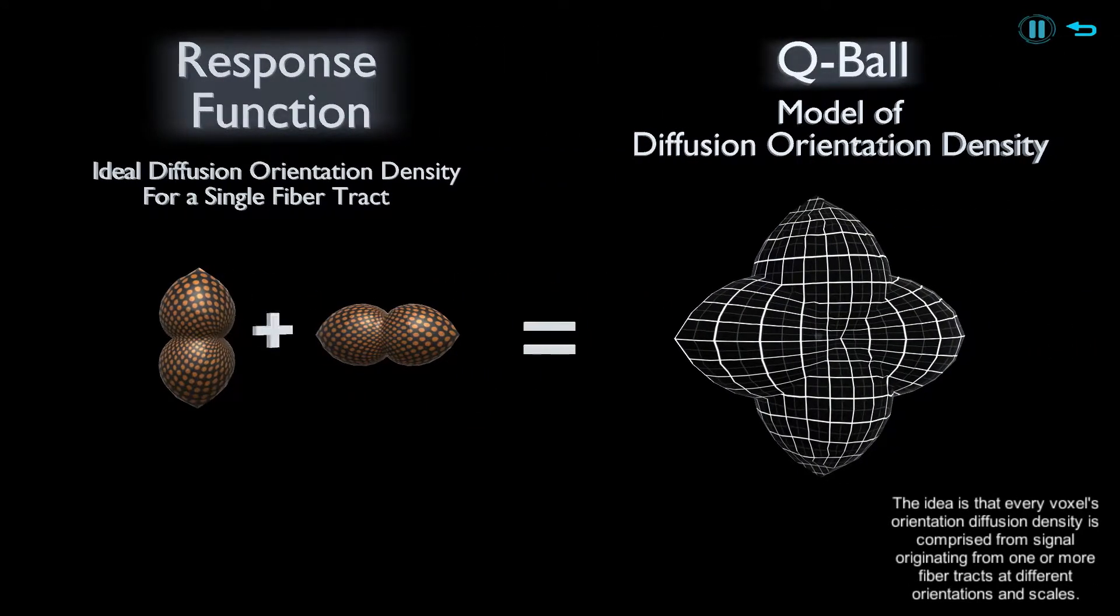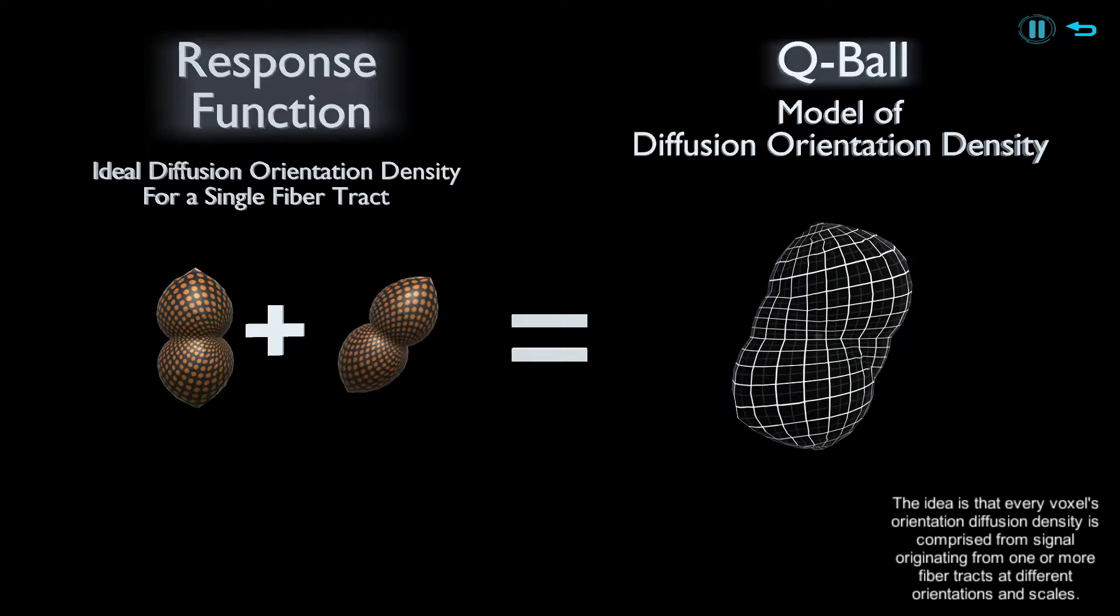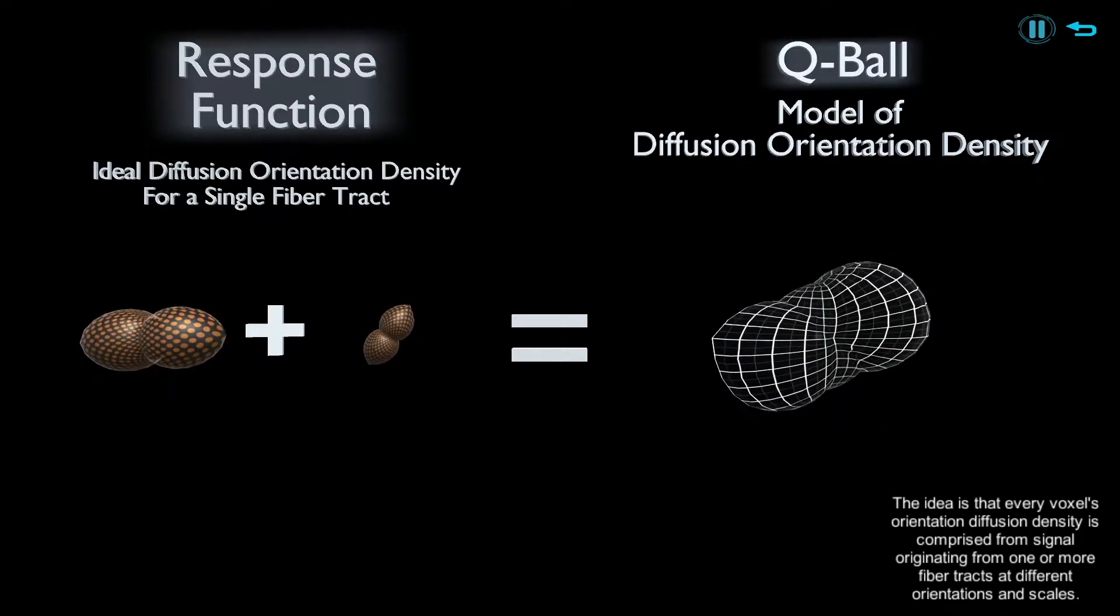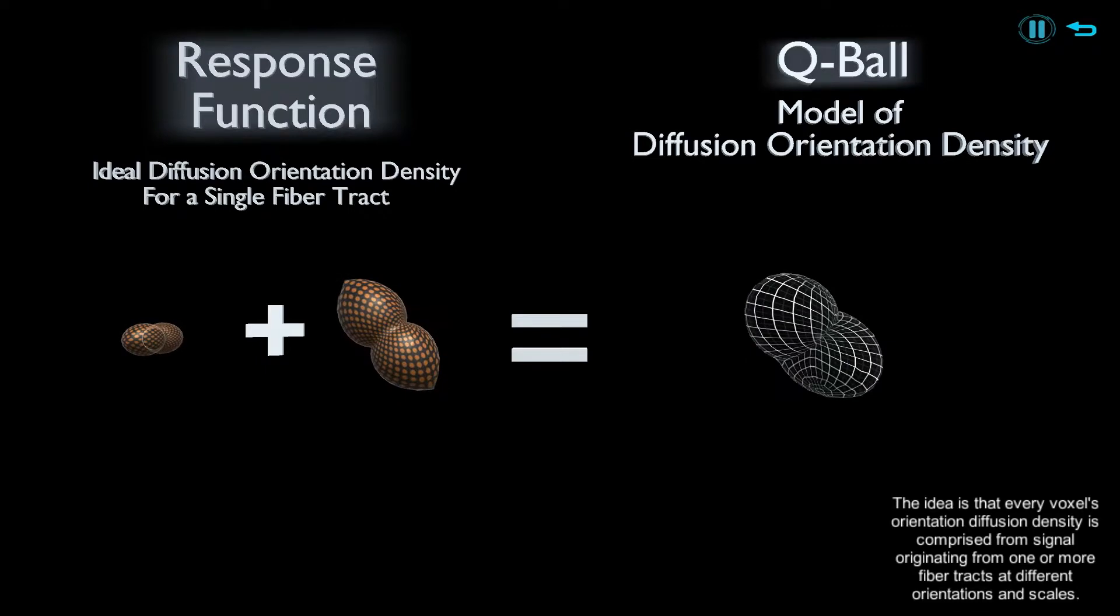The idea is that every voxel's orientation diffusion density is comprised from signal originating from one or more fiber tracts at different orientations and scales. Mathematically,